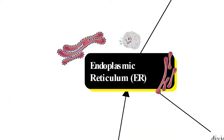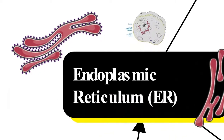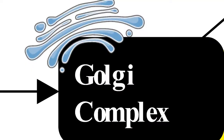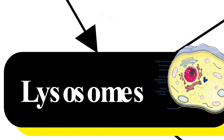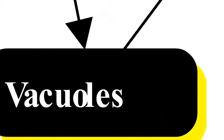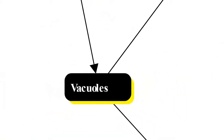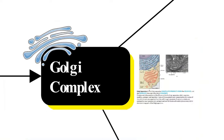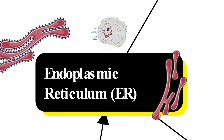The components of the endomembrane system include the endoplasmic reticulum, the Golgi complex (also called Golgi apparatus), lysosomes, and vacuoles. We will now discuss each component of this endomembrane system, starting with the endoplasmic reticulum.